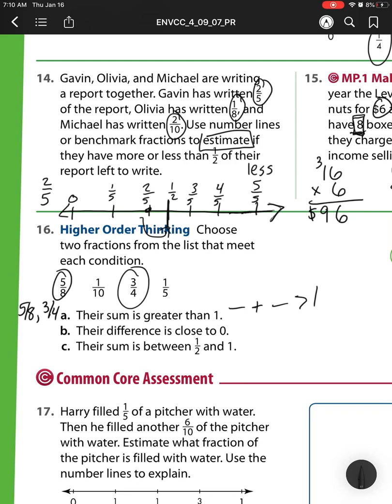For B, their difference—remember difference means subtraction—is close to 0. So I need two fractions that when I subtract them is close to 0. Well, here I see 1 fifth is close to 0, and 1 tenth is close to 0. So that is my difference.